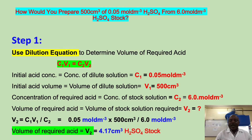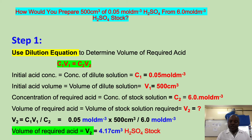V1 is the volume of the dilute solution, which is 500 cm³. C2 is the concentration of the stock solution, which is 6.0 mol per dm³.